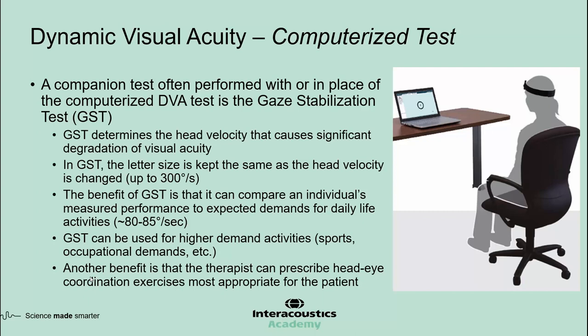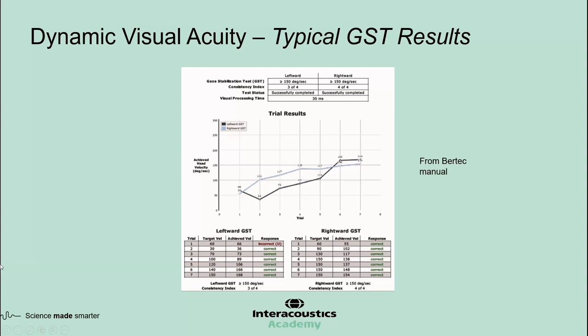Alternatively, GST can be used for individuals involved in higher-demand activities such as sports or certain occupations. Another benefit is that the therapist can prescribe head-eye coordination exercises most appropriate for the patient. For example, in a patient with a GST of 120 degrees per second, you want to start the head-eye coordination exercises right around or slightly below that value and push it up as the patient makes progress. In a standard performance GST, the maximum velocity is limited to 150 degrees per second. A person who achieves that level can perform normal daily activities with no issues, so there's no clinical need to proceed beyond that level.